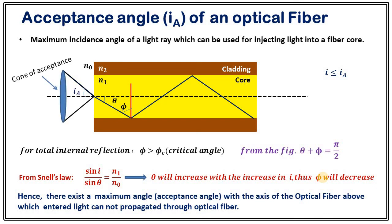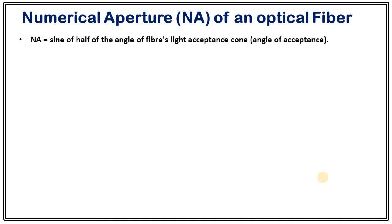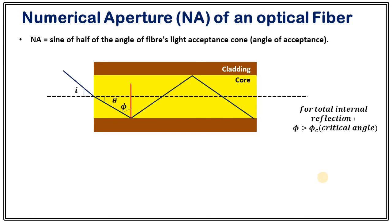Once we know the concept of acceptance angle, we can look at numerical aperture, another important characteristic. Since light is coming through a 3D object, we can make a cone — the angle of the slanting line with the axis of the optical fiber is i_a, and this is called the cone of acceptance. Numerical aperture of an optical fiber is the sine of half the angle of the fiber light acceptance cone, or simply sine of the acceptance angle. So what we need to find is sine of i_a.